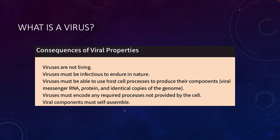Viruses must be infectious to endure in nature — they cannot replicate on their own and have to get into a host cell to persist. Viruses must use host cell processes to produce their components: their mRNA, their proteins, and copies of the genome. That's what distinguishes a virus from an intracellular bacterium like Chlamydia.